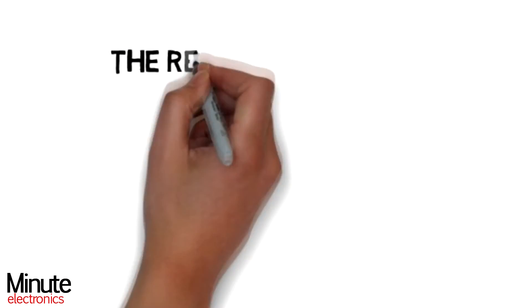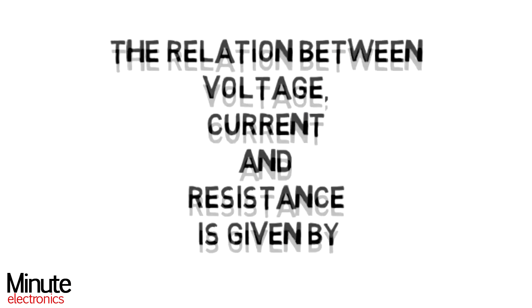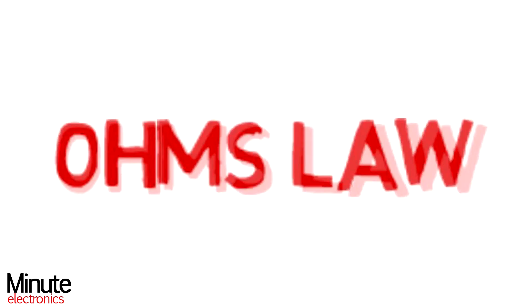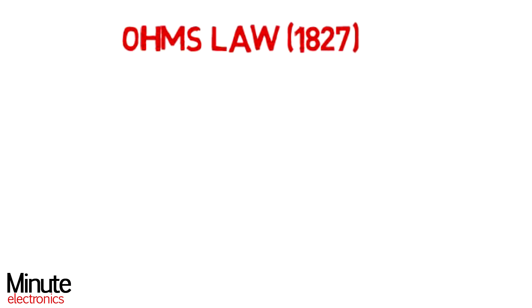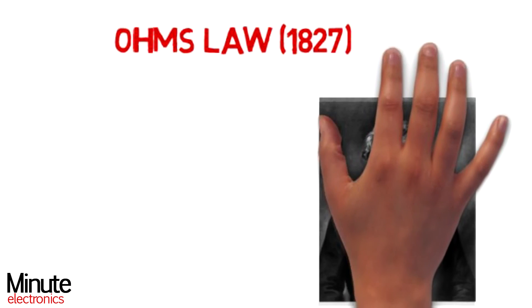The relationship between voltage, current and resistance is given by Ohm's law. Mr. Ohm was a German scientist who discovered Ohm's law in 1827.